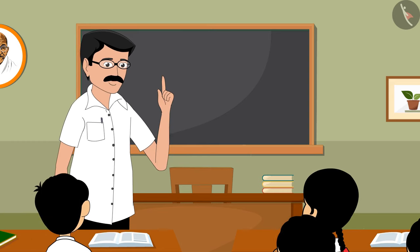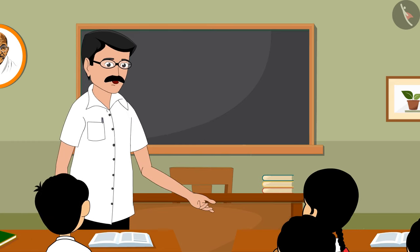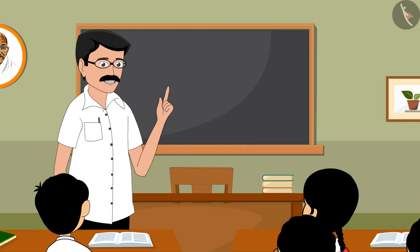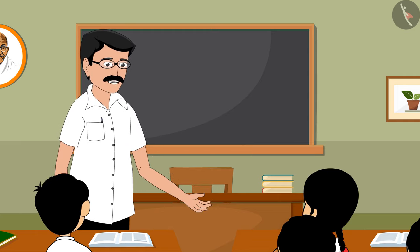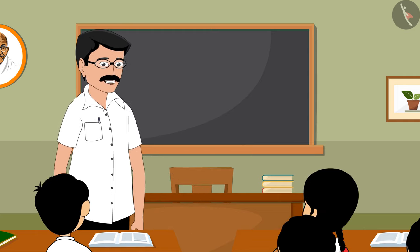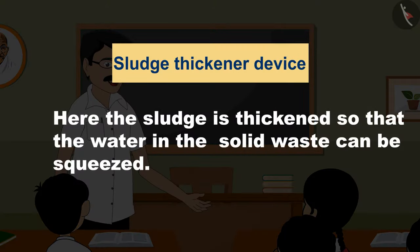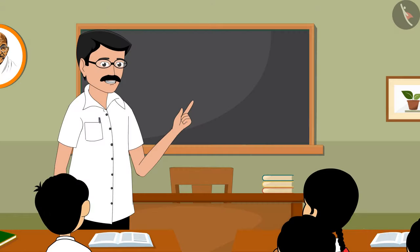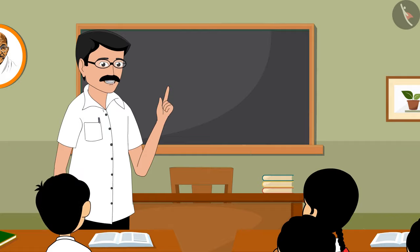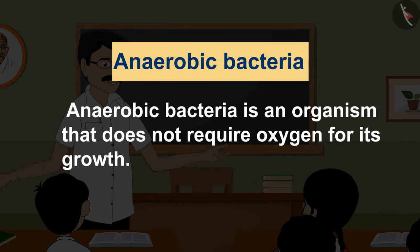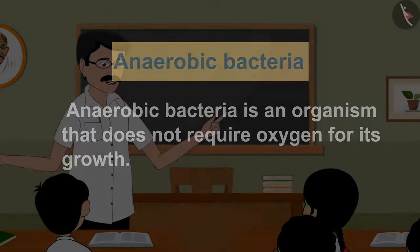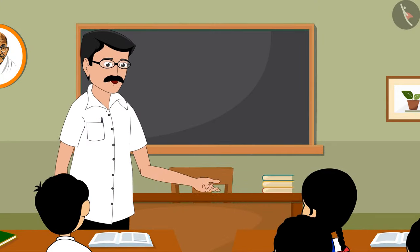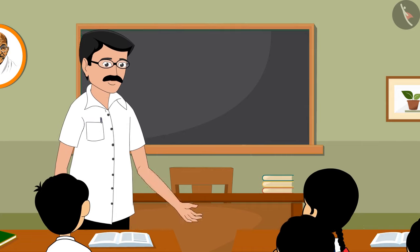Here, the biological waste is separated. Water is treated with chlorine and is used for irrigation, flushing, etc. The remaining water is sent to rivers and seas. The remaining biological waste or sludge is sent to the sludge thickener. Here, anaerobic bacteria converts thick sludge into gas in the absence of oxygen — this is called biogas. Very dried sludge is used as manure and nutrients for the soil.